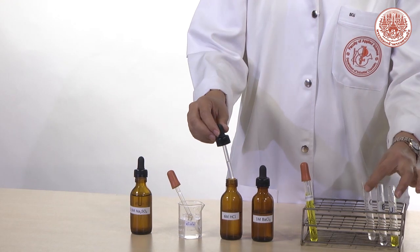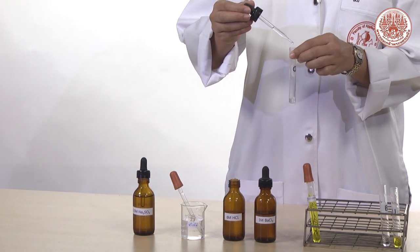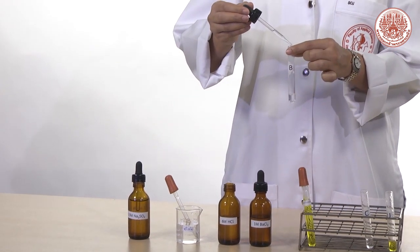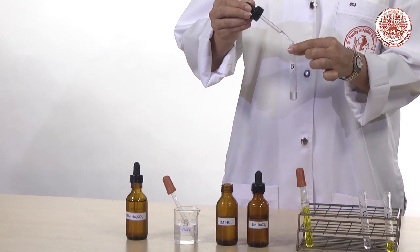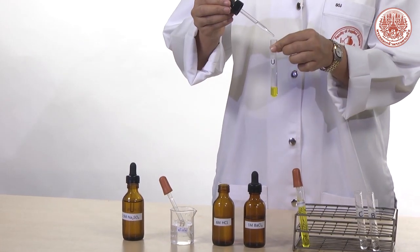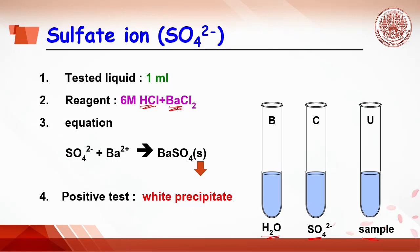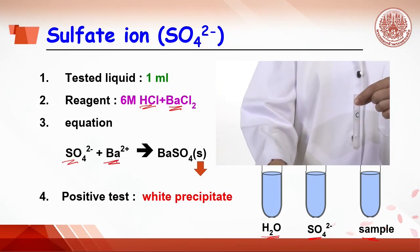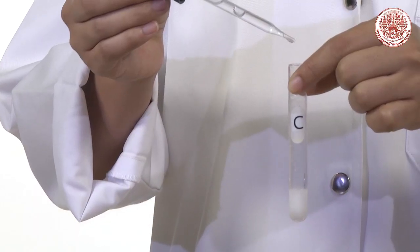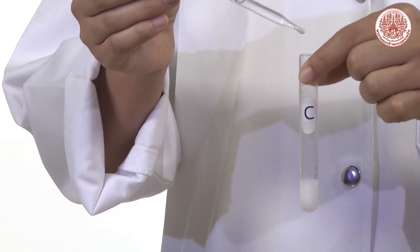The reagents are added by 20 drops of hydrochloric acid, followed by 2 or 3 drops of barium chloride. What happens now? Sulfate ion will react with barium ion to get barium sulfate, which is a white precipitate.